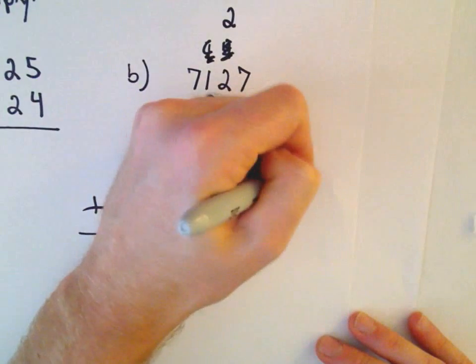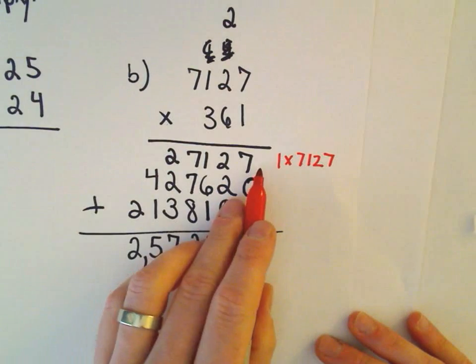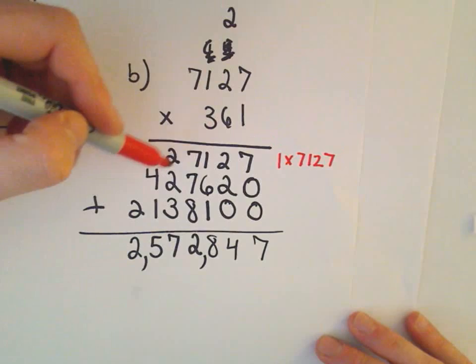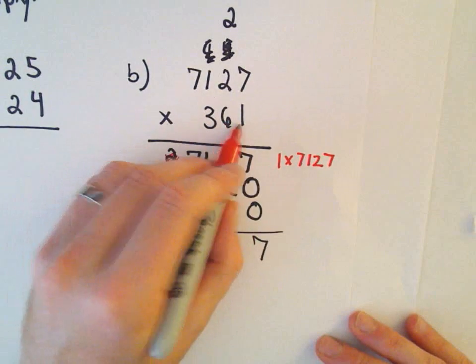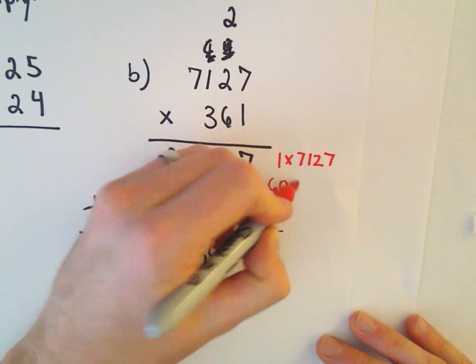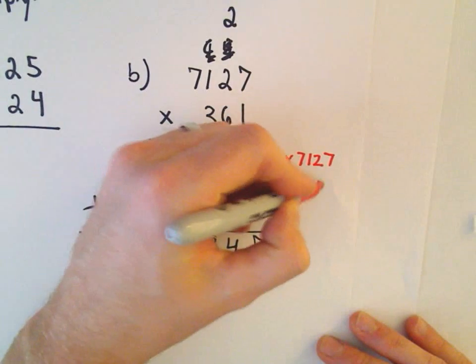And then we're just doing the next thing, which you can think about as being a 60. We're multiplying that by 7,127. That's how we're getting the middle row.